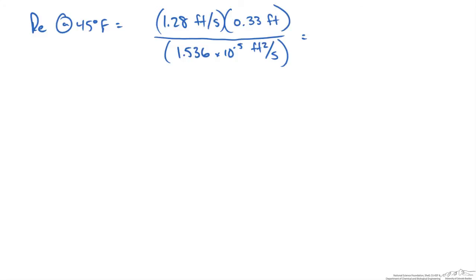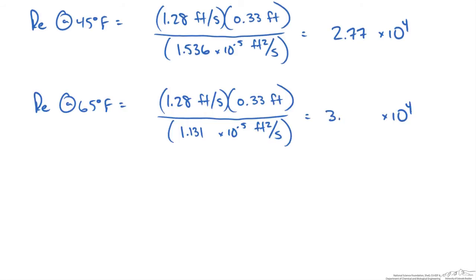Our Reynolds number at 45°F is 2.77 times 10⁴. If we repeat this calculation at 65°F, we get 3.76 times 10⁴. Indeed, for pipe flow a Reynolds number greater than 4000 indicates turbulent flow, so in both cases we have turbulent flow.